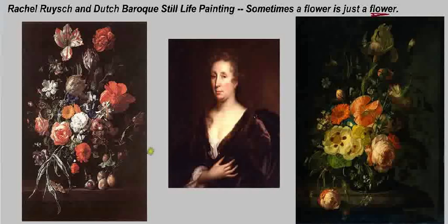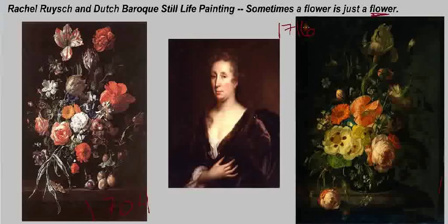The image on the left dates to 1704 and the image on the right dates to 1716. These dates are a little later than what we've been looking at so far in the Baroque — we're into the 18th century now. In that way, Rachel Ruysch is an interesting transitional figure.